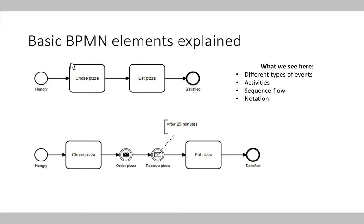An activity is represented by a rectangle with rounded corners — for example, 'choose a pizza' or 'eat a pizza.' Activities are connected in the process using sequence flows, which are simply small arrows connecting activities. Each activity needs to be connected to an ingoing and outgoing sequence flow.